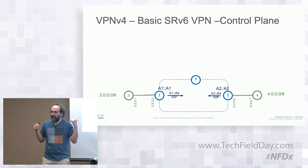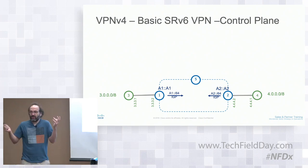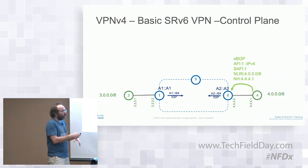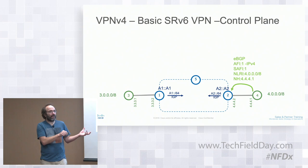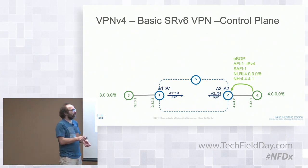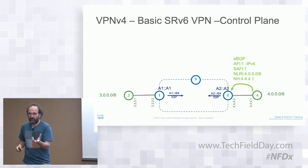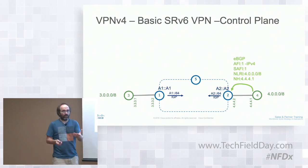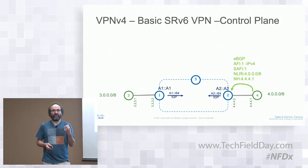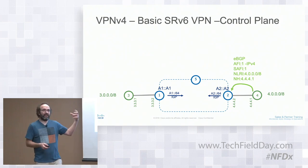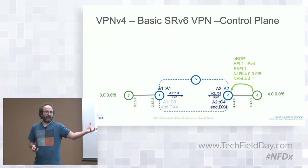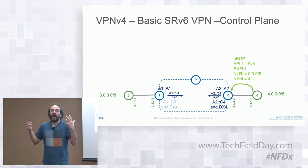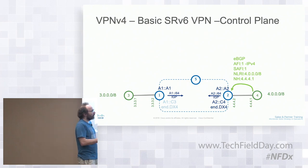In the MPLS L3VPN world, the PE allocates a label per CE, prefix, or VRF. In SRV6, instead of a label, the PE allocates an End.DX4 function SID. For all prefixes received from this CE (per-CE SID allocation), the PE will allocate End.DX4 and advertise it.